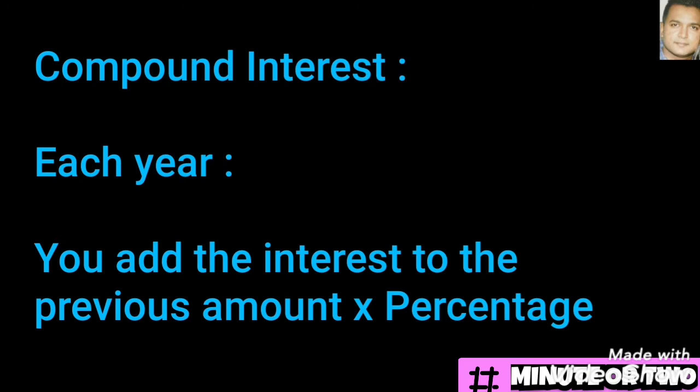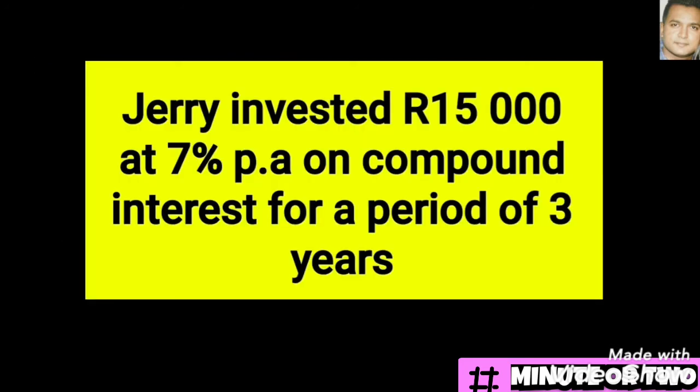For compound interest, you find the interest for the first year, then to find the interest for the second year you add the previous interest and calculate the new interest. Each year you keep adding the previous interest onto the amount — this becomes a new amount — and then you find the percentage of interest as given. This will make better sense when we look at an example.